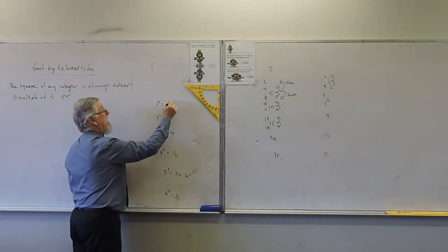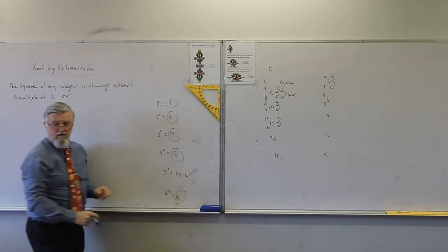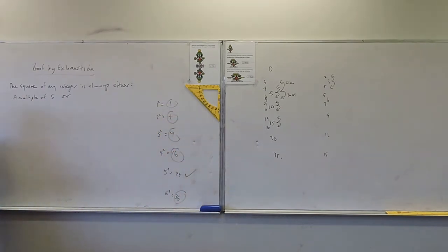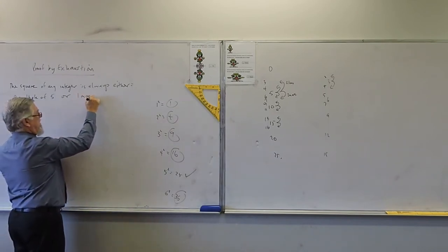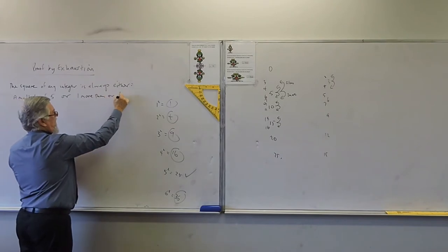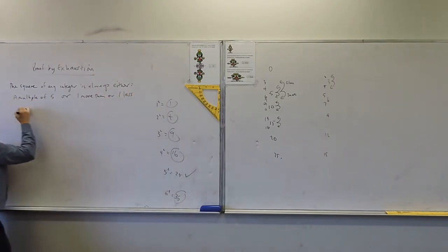We're now going to say, how do we describe that? One more than one less. Yeah. So it's either a multiple of five or one more than, or one less than a multiple of five.